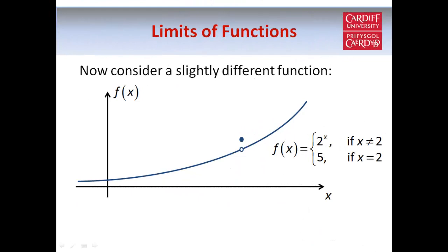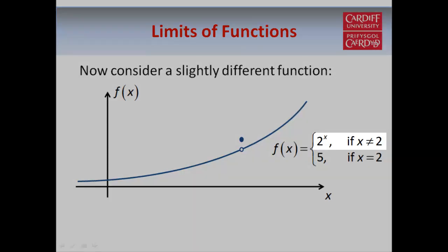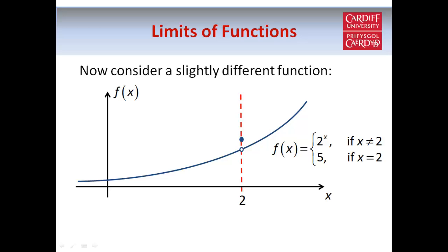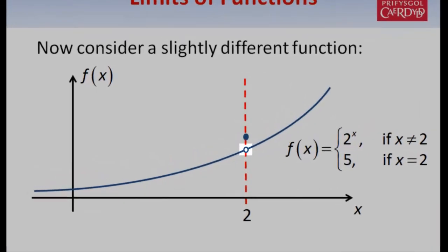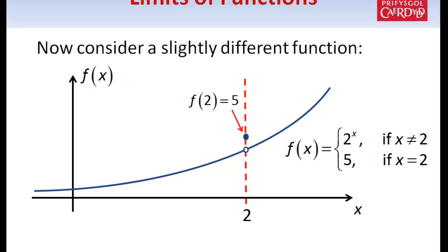Now let's consider a slightly different function. This time the function is defined differently depending on the value of x: if x is not equal to 2 the function is still 2 to the power x, but if x equals 2 the function takes a value of 5 instead of 4. On the graph at x equals 2 we have a hollow circle, and a filled-in circle at the value of 5 on the vertical scale, indicating that f of 2 equals 5. We now ask: what value does the function approach as x approaches 2?